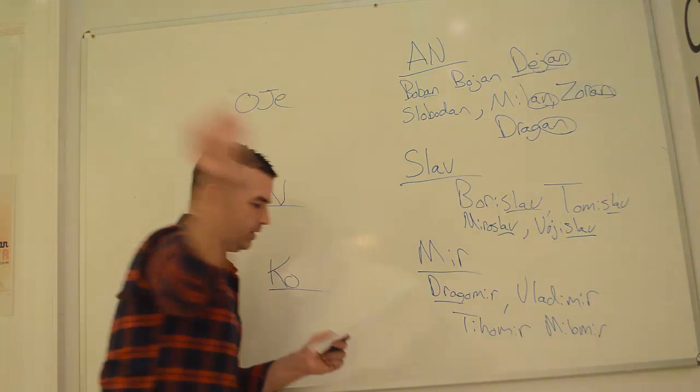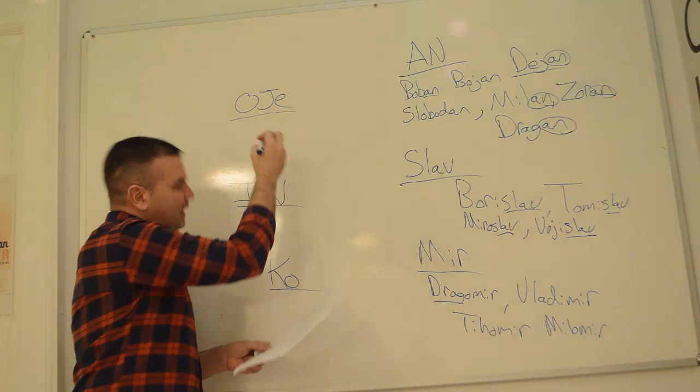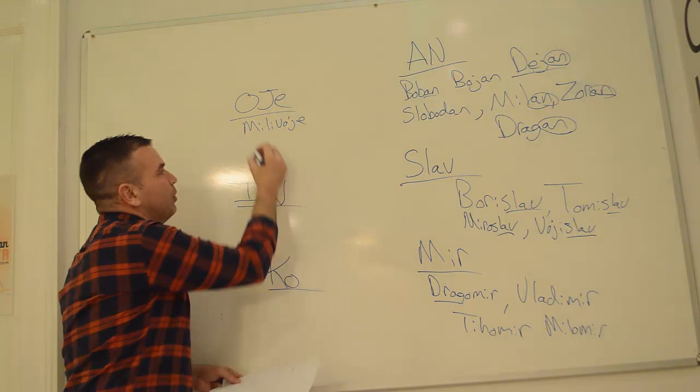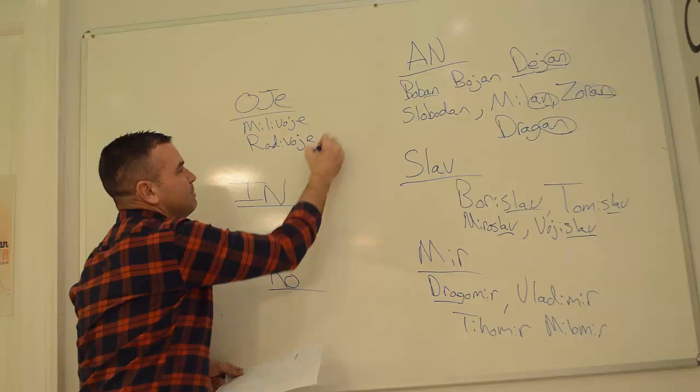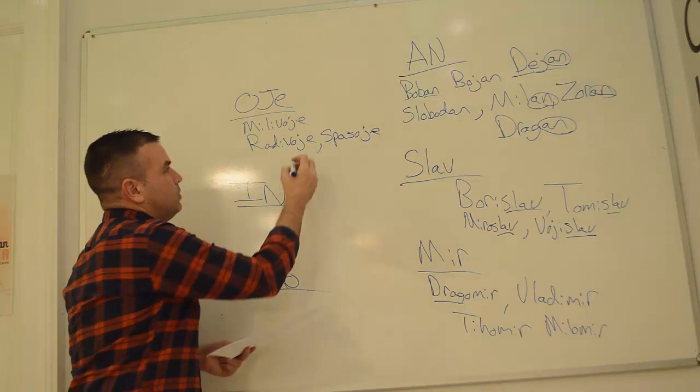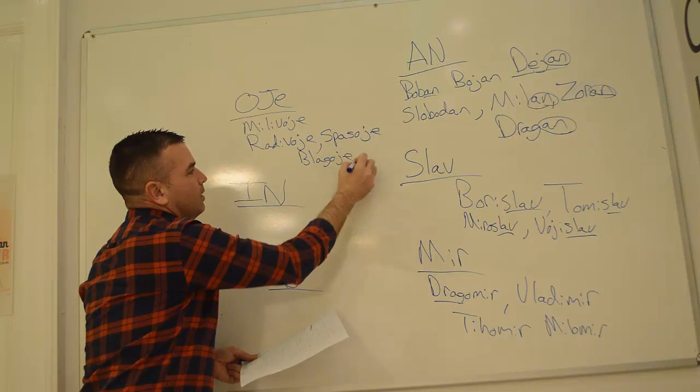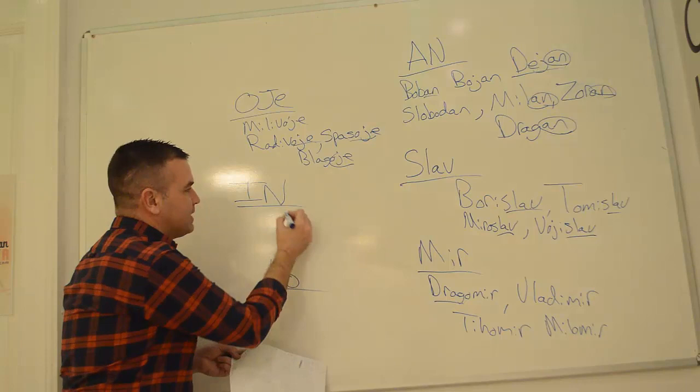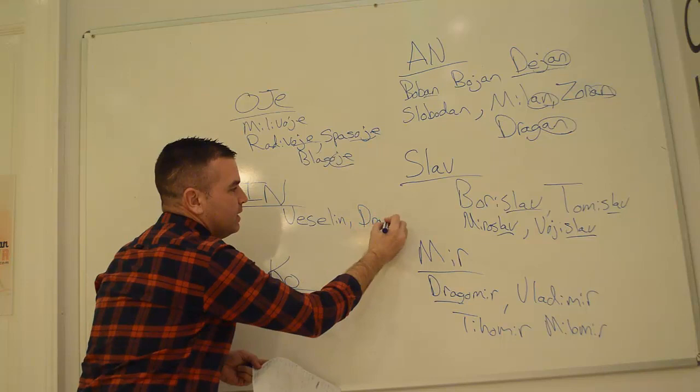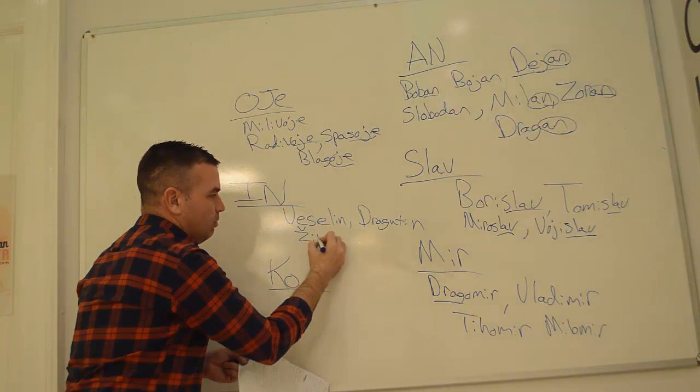This OJE ending - one that's always been tough for me. There's names like Milivoye, Radivoye. It just doesn't sound right coming off my tongue. Spasoye, Blackoye. OJE. IN is another common one - Veseline, Dragotene, Zhivoye.